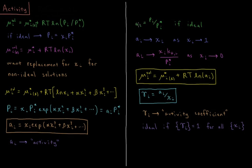For an ideal solution, the activity is just equal to the vapor pressure of the component divided by the vapor pressure of the pure liquid component, just as it is for Raoult's Law. We know that for even non-ideal solutions, the activity approaches the mole fraction as the mole fraction of the component approaches one, because Raoult's Law is obeyed for all liquids as their mole fraction approaches one. The activity approaches the mole fraction times Henry's Law constant divided by the pure vapor pressure of component i as the mole fraction of i approaches zero. For ideal cases, Henry's Law constant is just the vapor pressure of component i, so the activity is just the mole fraction at all mole fractions.